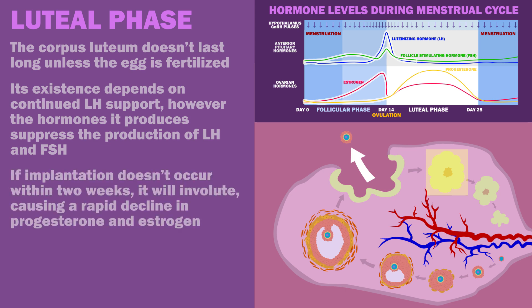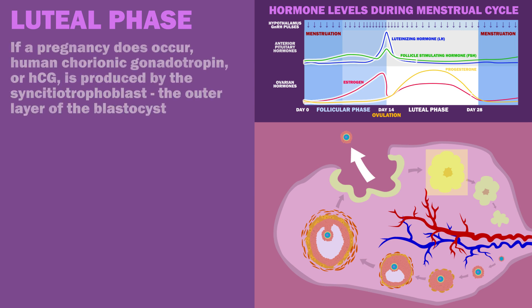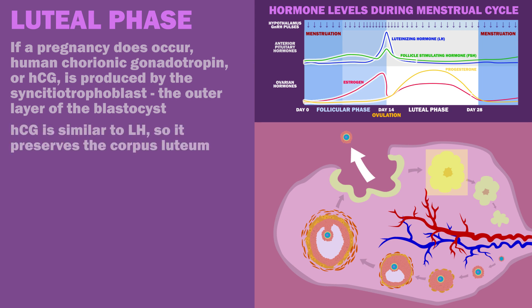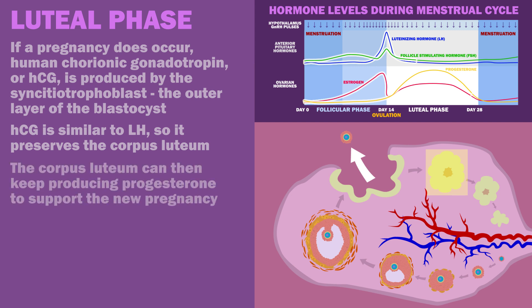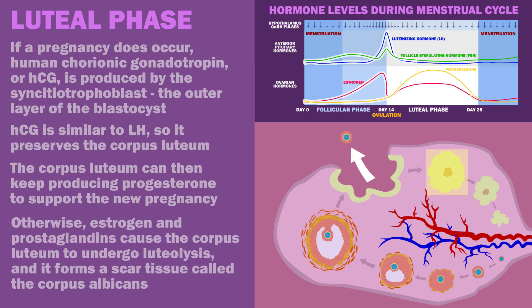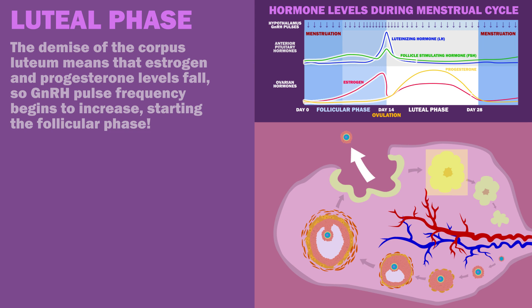If implantation doesn't occur within two weeks, the corpus luteum will involute, causing a rapid decline in progesterone and estrogen. If a pregnancy does occur, human chorionic gonadotropin, or HCG, is produced by the syncytiotrophoblast, the outer layer of the blastocyst. HCG is similar to LH, so it preserves the corpus luteum, which can then keep producing progesterone to support the new pregnancy. Otherwise, estrogen and prostaglandins cause the corpus luteum to undergo luteolysis, and it forms a scar tissue called the corpus albicans. The demise of the corpus luteum means that estrogen and progesterone levels fall, so GnRH pulse frequency begins to increase, starting the follicular phase.